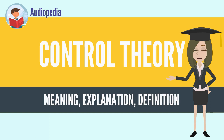or SP-PV error, is applied as feedback to generate a control action to bring the controlled process variable to the same value as the set point.